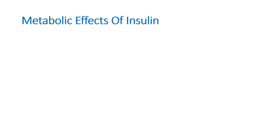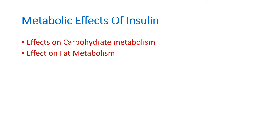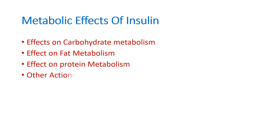Whenever you start the answer, you first have to write an introduction about what hormone insulin is — it is a hormone which is produced by the pancreas and its main function is to decrease the glucose level. Write 2 or 3 sentences as an introduction, and then write the metabolic effects: the effect of insulin on carbohydrate metabolism, the effect on fat metabolism, the effect on protein metabolism, as well as other actions.